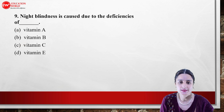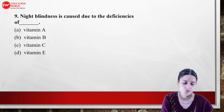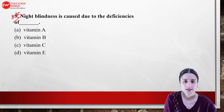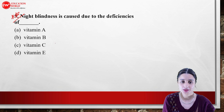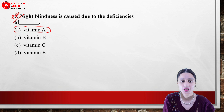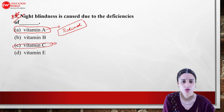Night blindness is caused due to the deficiency of vitamin A. The chemical name of vitamin A is retinol, and vitamin C is ascorbic acid.